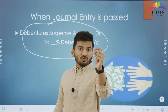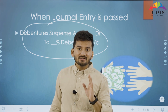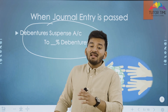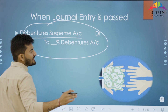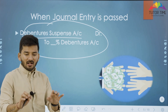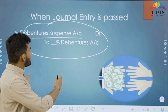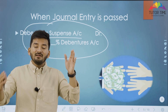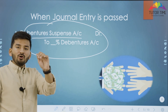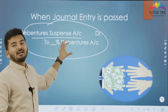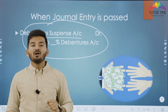To conclude: when you issue debentures normally for cash, you pass Bank Account Dr. to % Debentures. But here it is a loan — you are issuing a debenture as collateral security, so you pass Debenture Suspense Dr. to % Debenture Account. This notional entry informs users of financial statements that the loan has been secured by issuing debentures as collateral security.